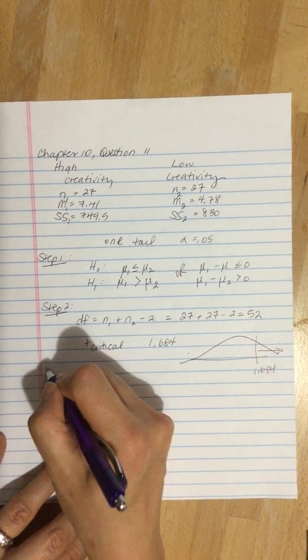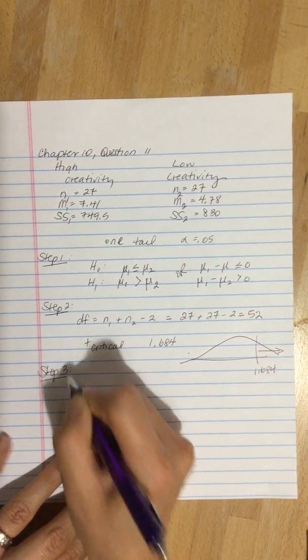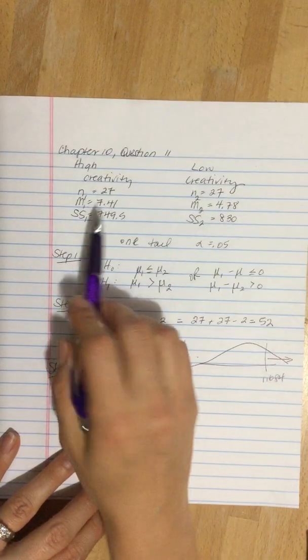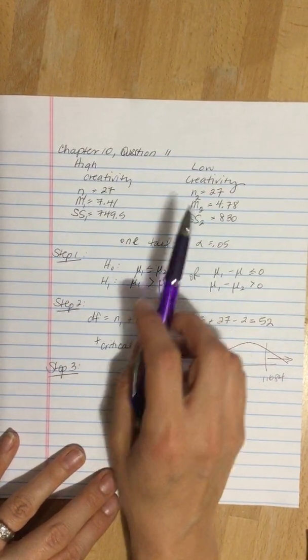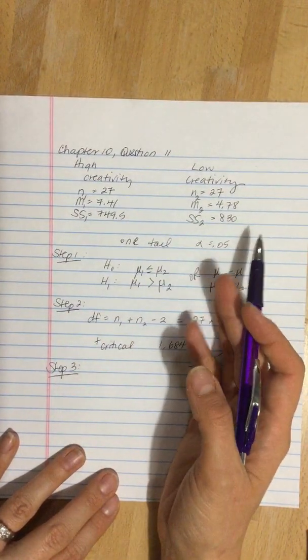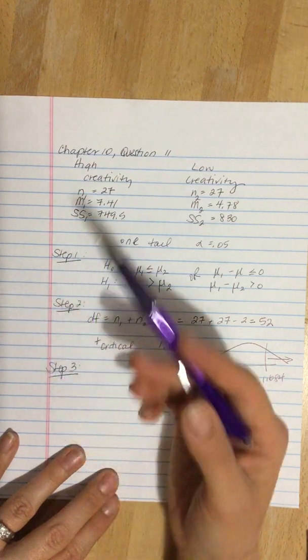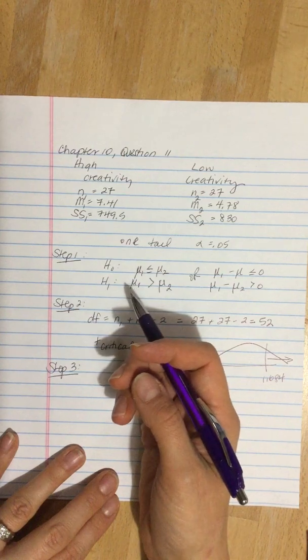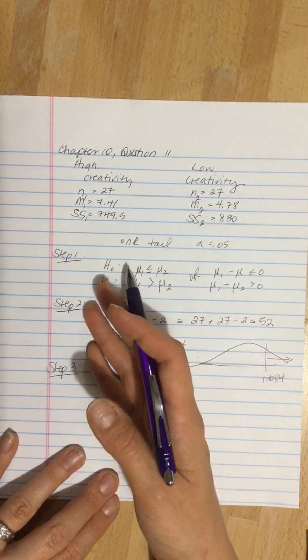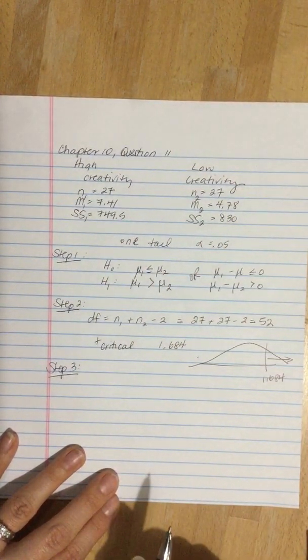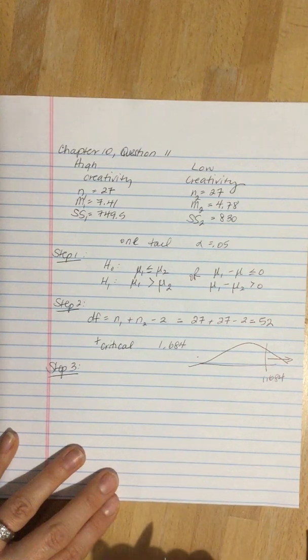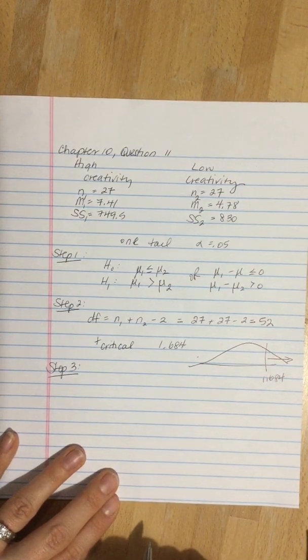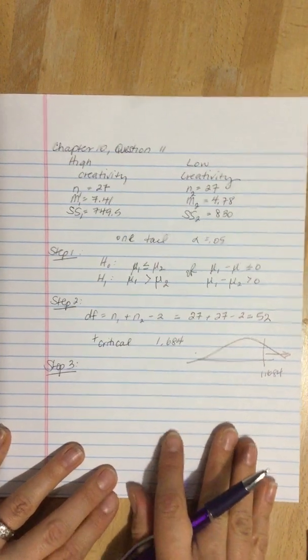Step three. We need to calculate our test statistic. Now because the sample sizes are the same we could calculate our variances by taking our sum of squares dividing by our degrees of freedom and plug those directly into our estimated standard error. Alternatively we can calculate the pooled variance and plug that in. That's what I'm going to do, but either will get you the correct answer because we've got the same sample sizes here.